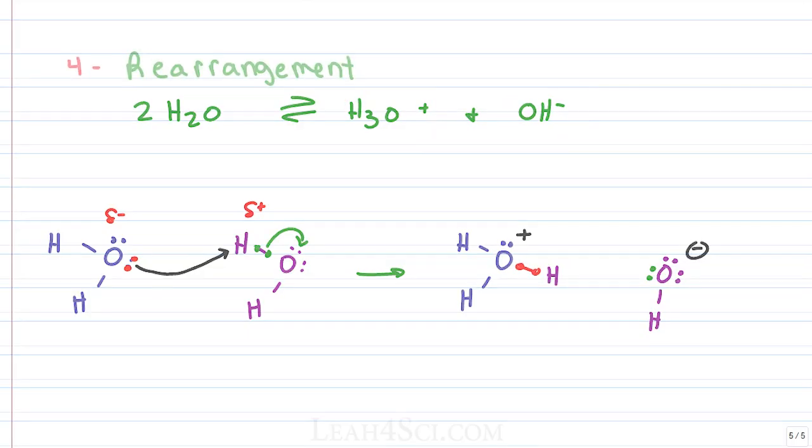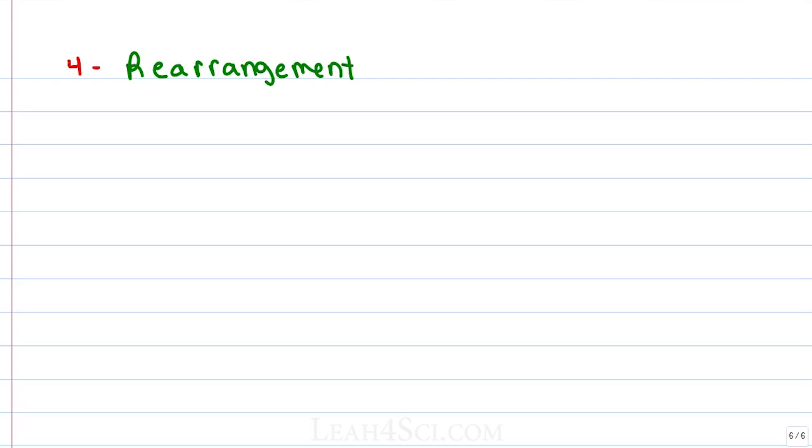Last but not least, we have the rearrangement arrow mechanism. As the name implies, something is rearranging, something is moving around. You'll see this early on when you're studying carbocation rearrangement, for example, a hydride shift or a methyl shift. If you're not familiar with this, make sure to study my tutorial linked below.